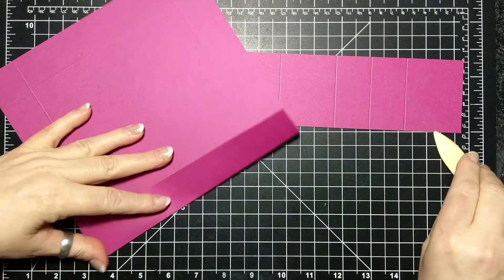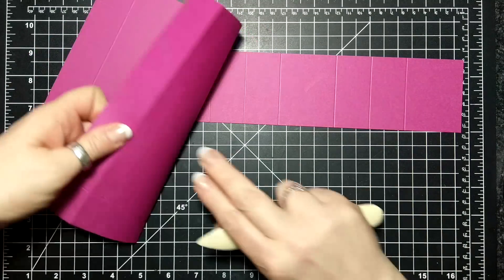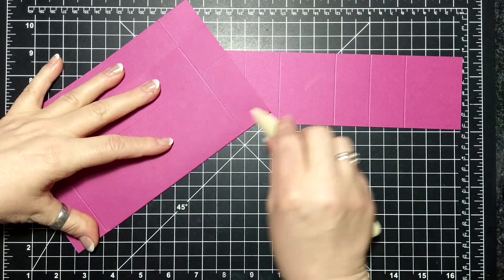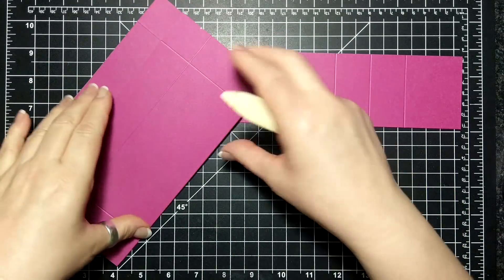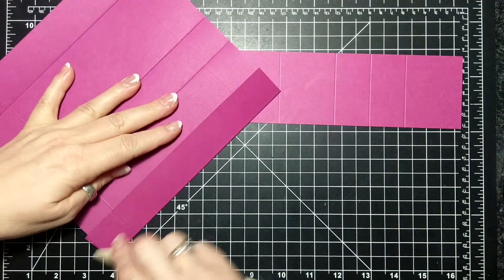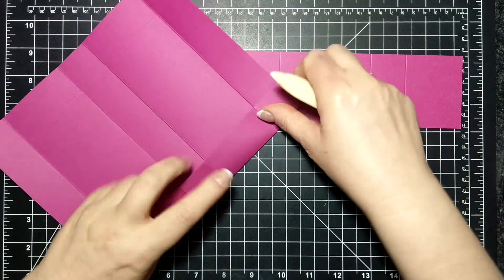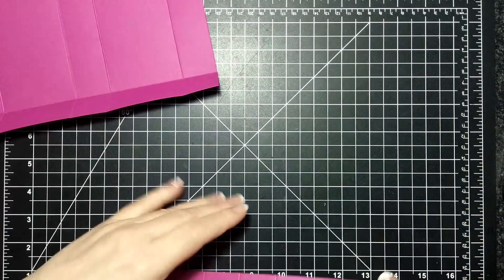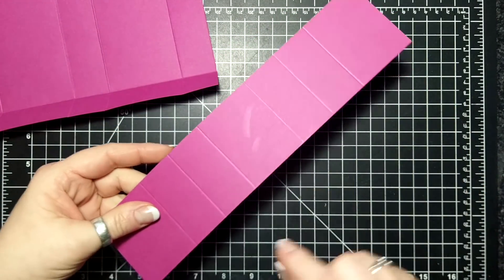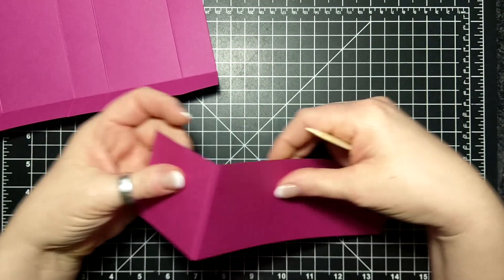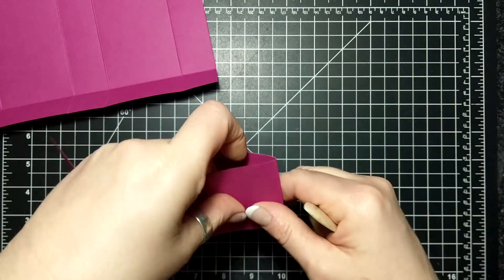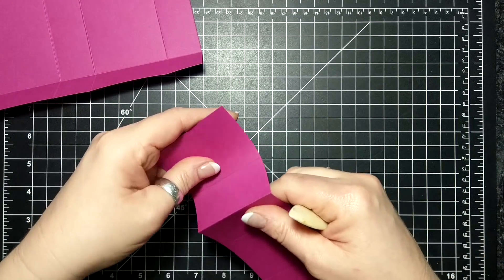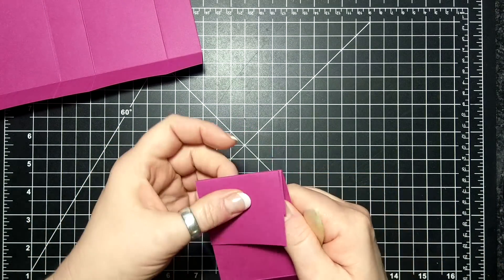So I'm gonna fold and burnish all of my score lines. So this one, because it's an insert, that middle line of the score line goes up. So you can do those ones first, and then every other score line goes in on itself.